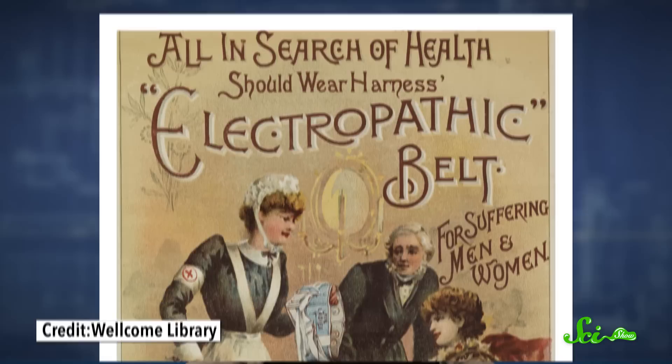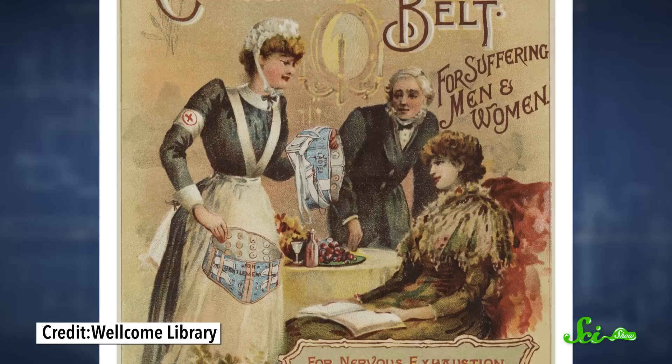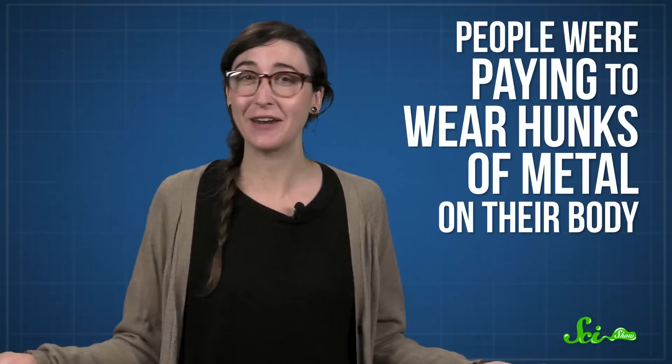Soon, all sorts of bogus inventions started popping up in advertisements in medical journals. In 1885, ads for the electropathic belt claimed that it could generate a gentle electric current in the wearer's body and treat a bunch of conditions, like paralysis and gout or indigestion. But it was just made of stacks of zinc and copper plates that actually didn't generate electricity, so people were paying to wear hunks of metal on their body.